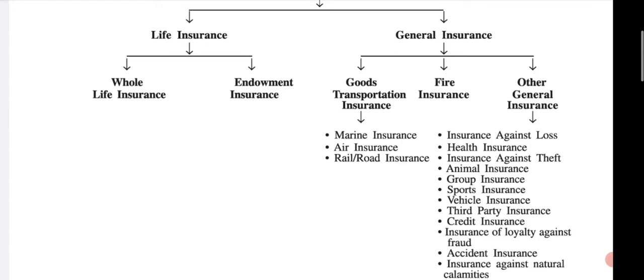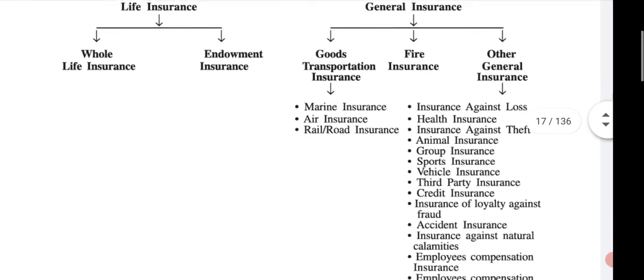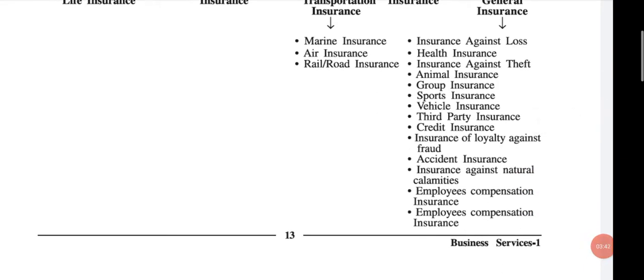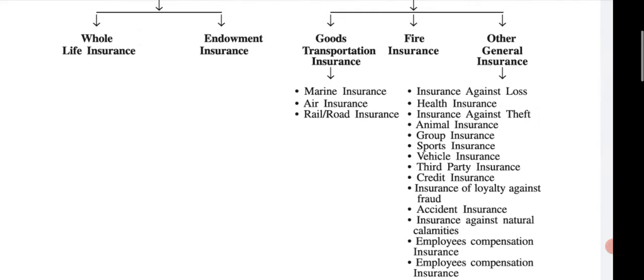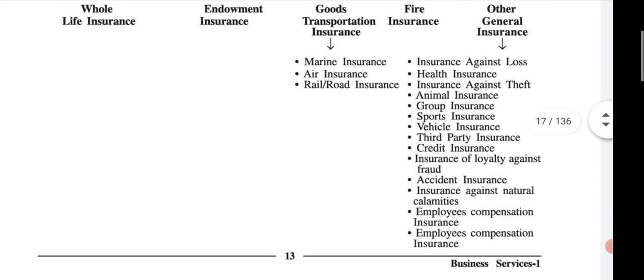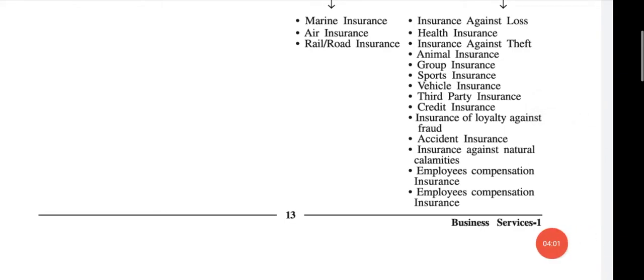Under general insurance there are three types: goods transportation insurance, fire insurance, and other general insurance. Goods transportation insurance includes marine insurance (related to sea transportation), air insurance, and railway insurance. Other insurance types include health insurance, insurance against theft, animal insurance, group insurance, sports insurance, vehicle insurance, third party insurance, and credit insurance.